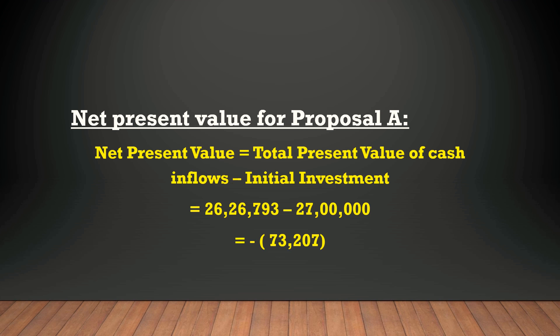For NPV calculation, the formula is total present value of cash inflows minus initial investment. We discounted the cash inflows at 15 percent to get their present values. The total present value of cash inflows came to 26,26,793, whereas the initial outflow was 27,00,000. Since present value of cash inflows is less than initial outflow, the NPV is negative: minus 73,207. That is the NPV for Proposal A.